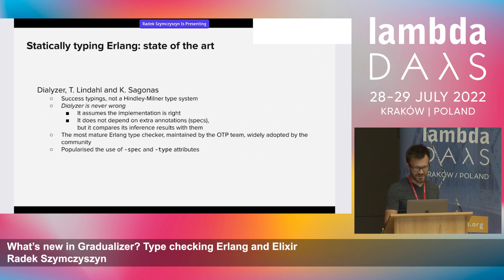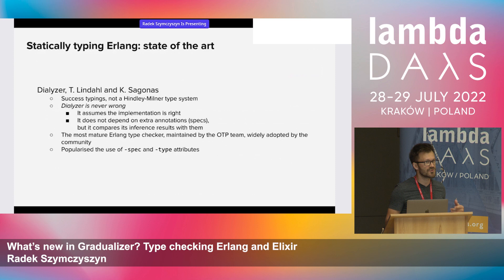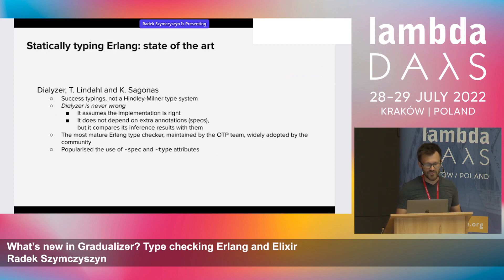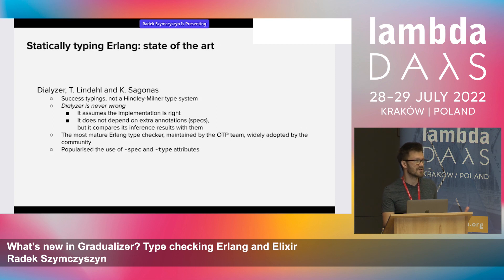The second actor is Dialyzer, invented by Tobias Lindahl and Kostis Saganas, and is the most mature and widely adopted Erlang type checker, now maintained by the OTP team. It's quite different from Hindley-Milner — it uses the theory of success typings, with the slogan that Dialyzer is never wrong. It always assumes the implementation is right and only reports errors when it can find a counterexample. Dialyzer also popularized the use of spec and type annotations in Erlang source code.